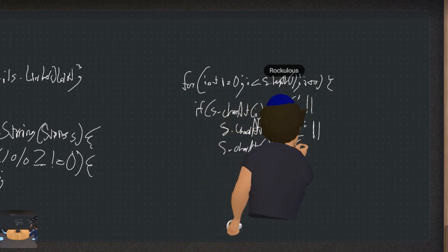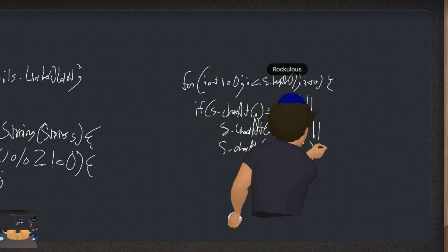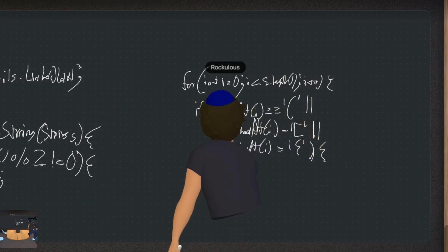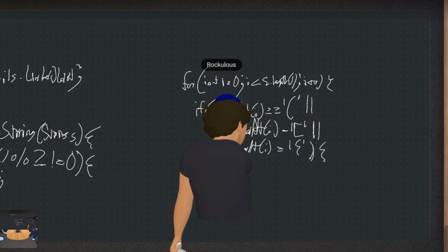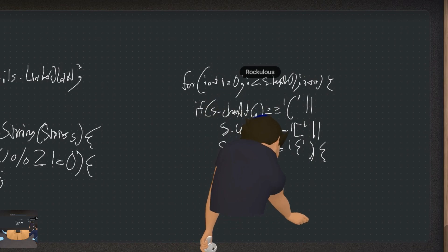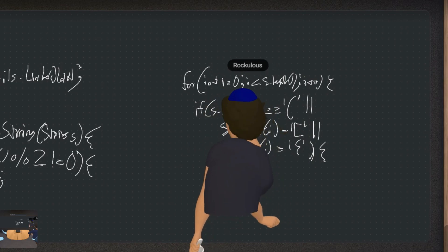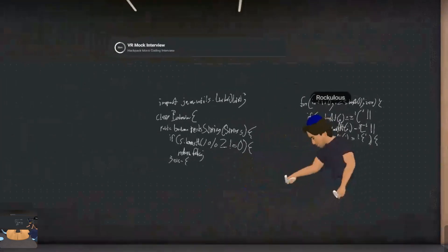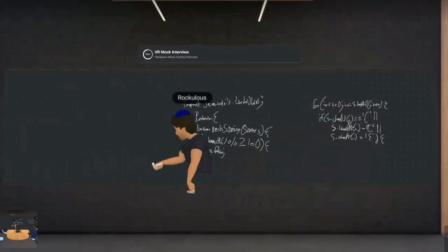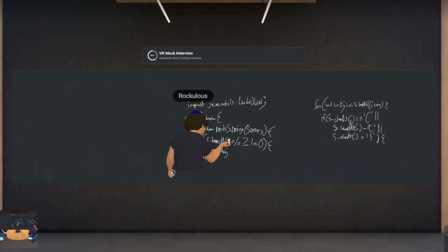If the character equals an open curly brace, then we want to add it. Actually, I realize I missed one thing — I did not actually initialize the linked list, so let me do that.